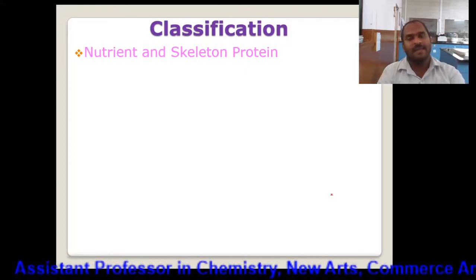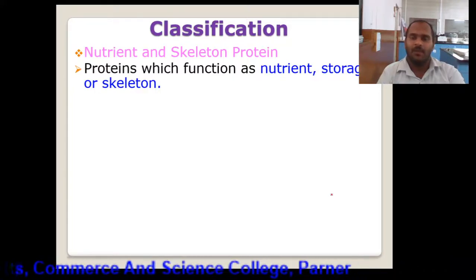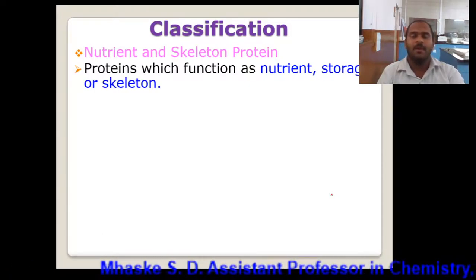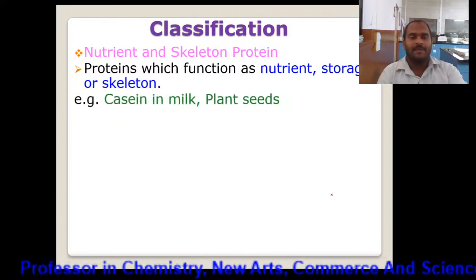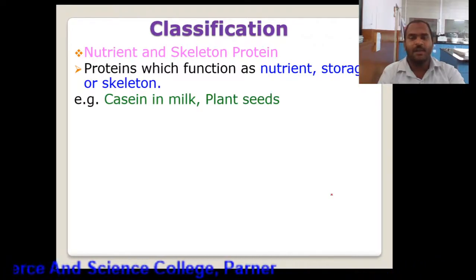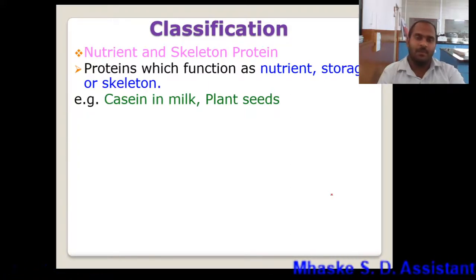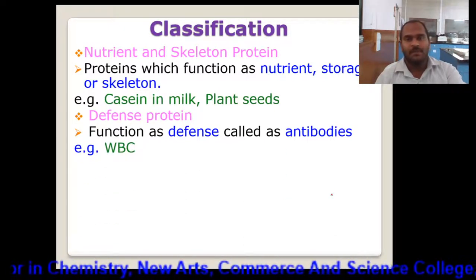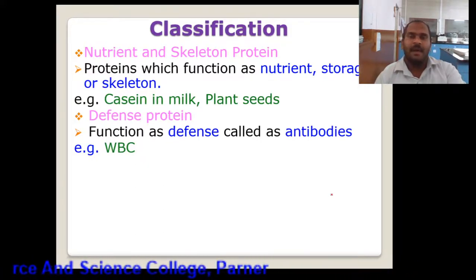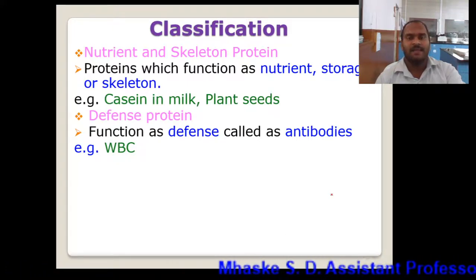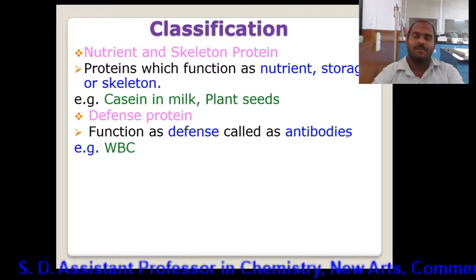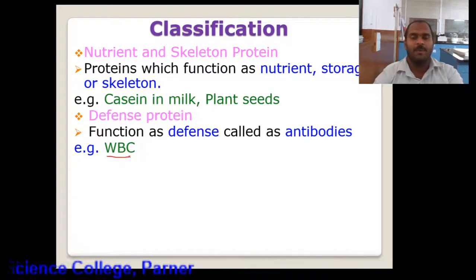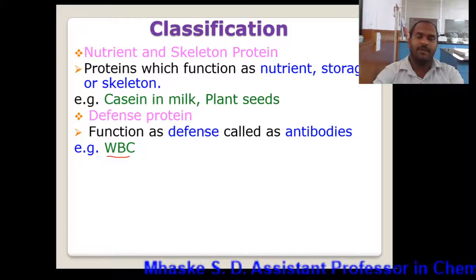The next class is nutrient and skeletal protein. These proteins have a function as nutrient storage or are part of the skeleton. They have nutritional value. Example is casein, which is present in the milk, and plant proteins which are present as a storage form of energy. The next class is defense protein. The function of this protein is defense, meaning they are associated with the defense mechanism of the body. They are called antibodies. Example: WBC — white blood cells, which are examples of defense proteins present in the blood.